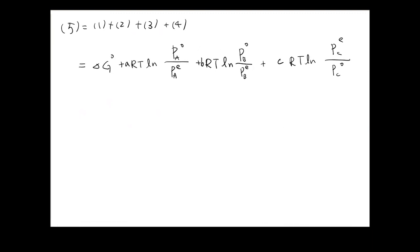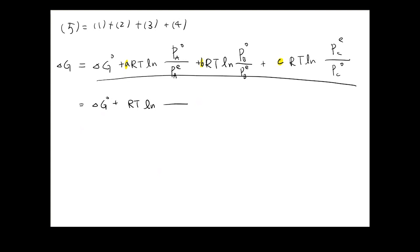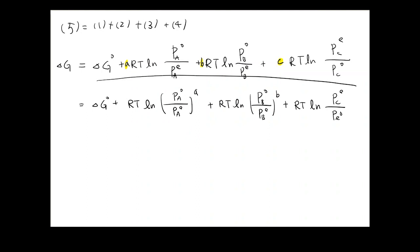With those corrections, the equation becomes ΔG° + A·RT ln(Pa°/Pa_eq) + B·RT ln(Pb°/Pb_eq) + C·RT ln(Pc_eq/Pc°). So the complete equation has ΔG° plus stoichiometrically weighted natural log terms for each species, written as RT ln(Pa°/Pa_eq)^A + RT ln(Pb°/Pb_eq)^B + RT ln(Pc_eq/Pc°)^C.